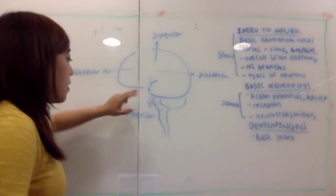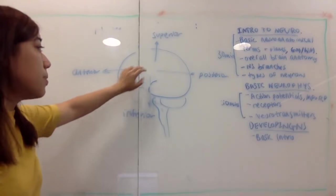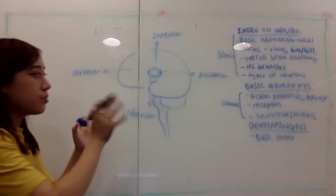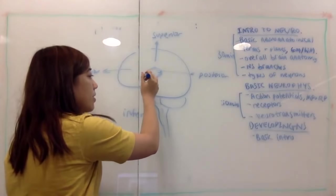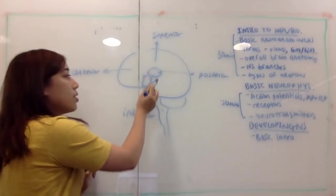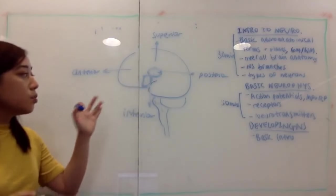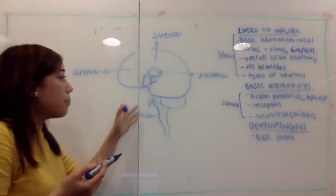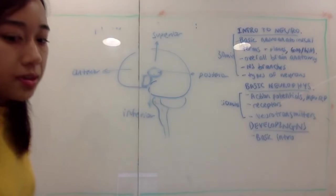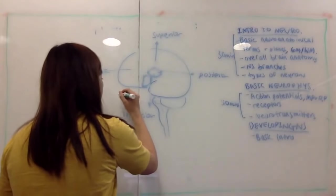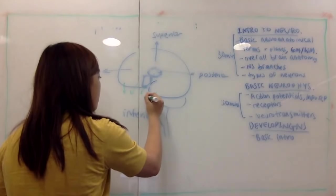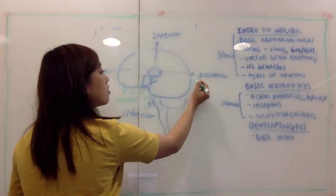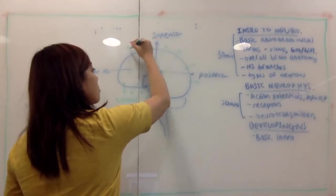If you want to describe a location — say the thalamus is central in the brain and the hypothalamus is here — you could say 'anterior inferior to the thalamus,' but we have more specific terms. Anything going inward would be known as ventral, and anything going outward would be known as dorsal. For example, the corpus callosum is dorsal to the thalamus, while the hypothalamus is ventral to the thalamus.